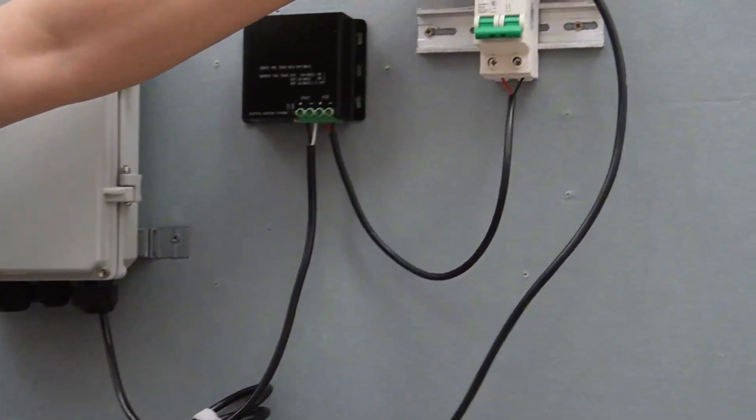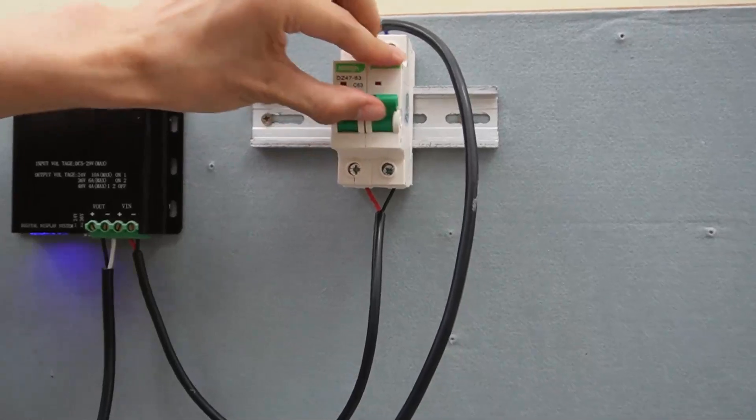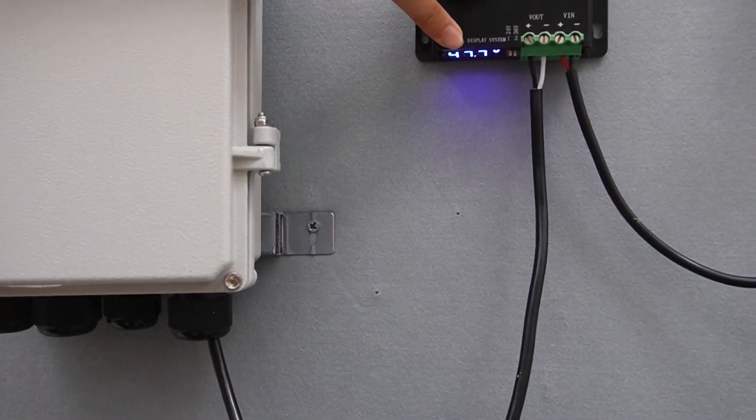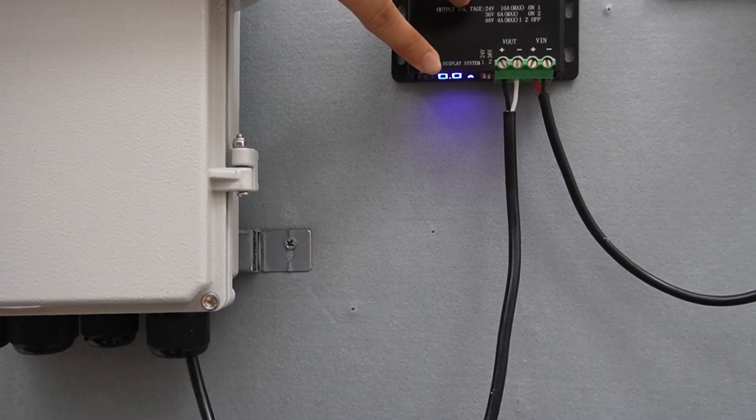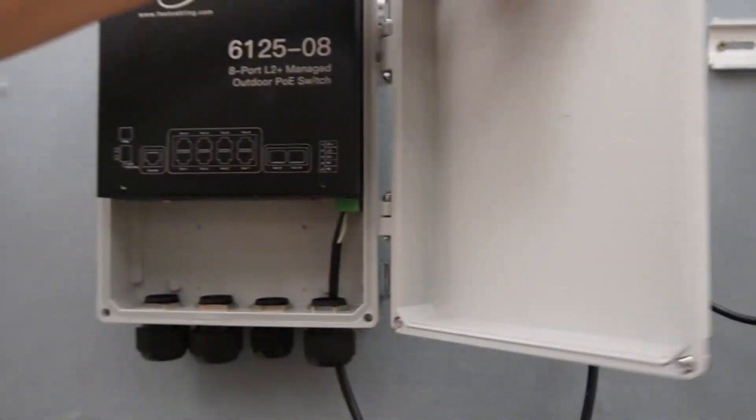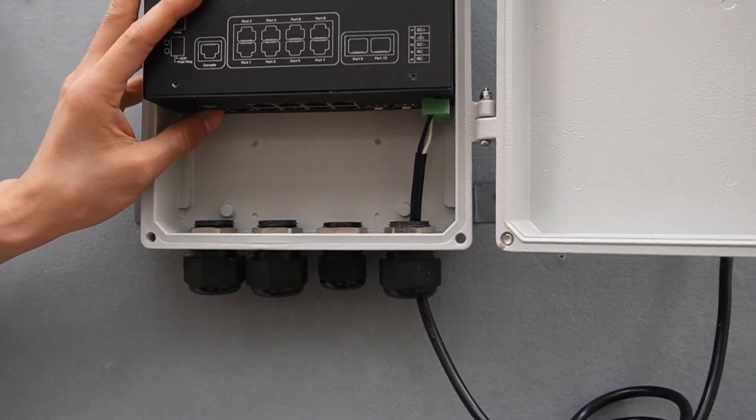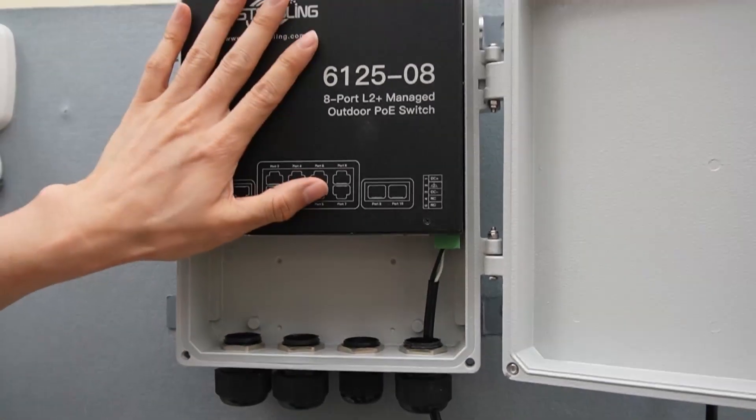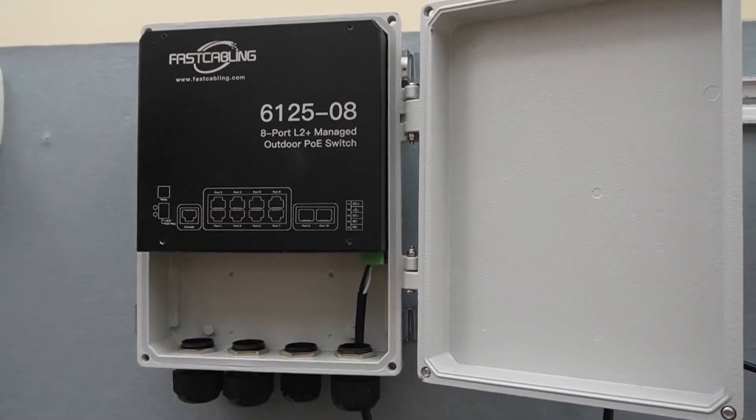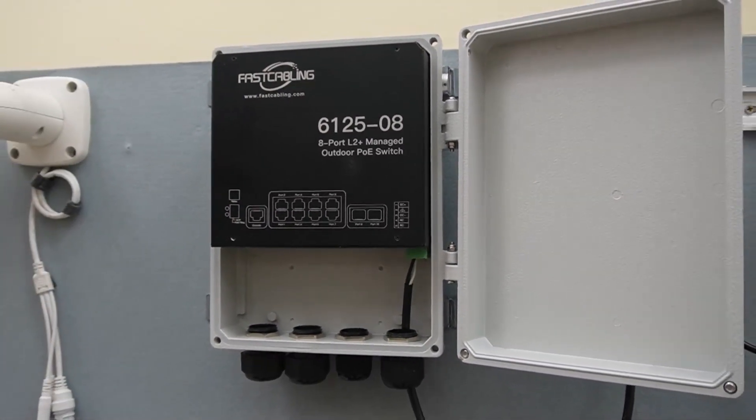Just one last step, turn on the switch. Now, we're getting the power. The reading shows the output voltage is about 48 volts. We have the battery powering this outdoor PoE switch. I've seen the power from this outdoor PoE switch. The PoE switch is ready.